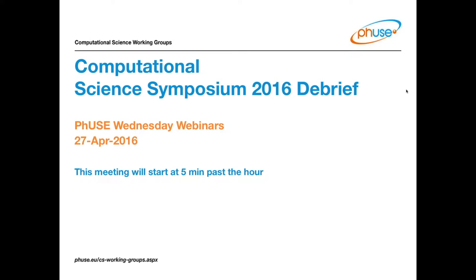Welcome to the Webinar Wednesday session. Today's session will be focused on a debrief from the 2016 Computational Science Symposium, which occurred in March of this year. We have the working group co-leads here to give an overview of their activities during the session. I'm here in place of Chris Decker to provide an overview of the CSS itself, and I'll also cover a CSS event we're running in Europe in June, in Basel.